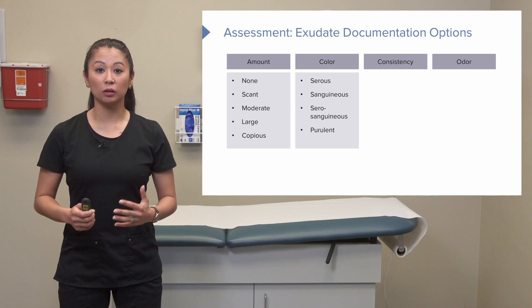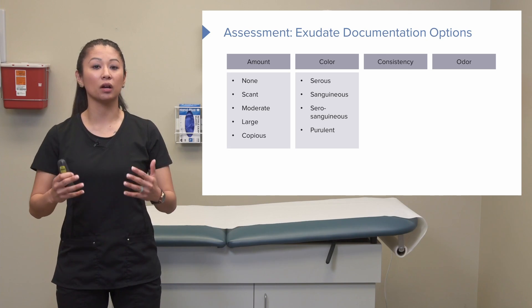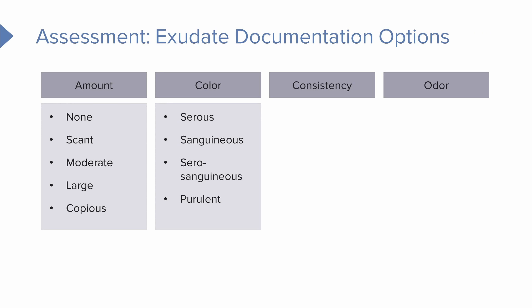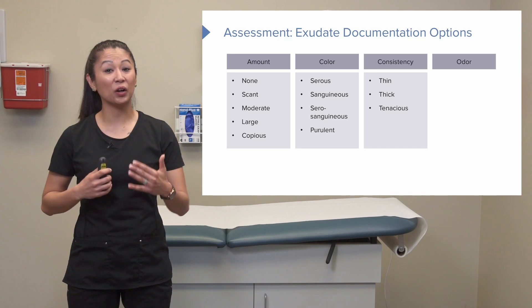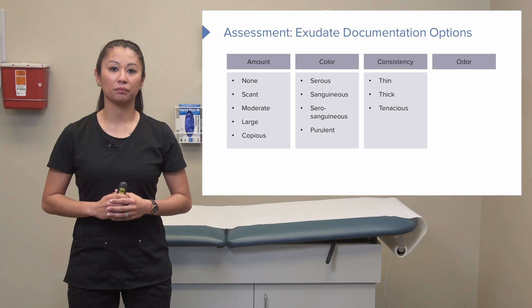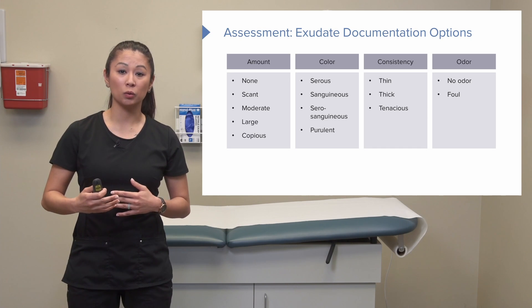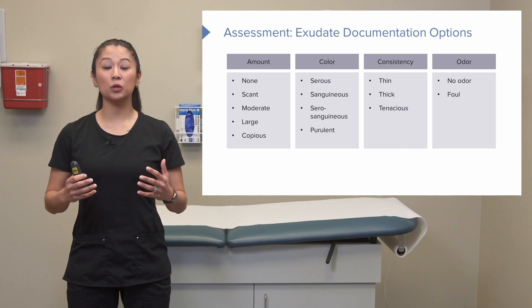For color, get familiar with these terms because this is how we document drainage. It should go from serous — a light yellowish to clear — to sanguineous, which is bloody drainage, to serosanguineous, which is a mix of clear fluid and blood. Purulent drainage could be discolored and may be a sign of infection. For consistency, exudate should be fairly thin, but can become thick or tenacious if there are signs of infection. Regarding odor — a foul odor could be a sign of infection and needs to be reported.